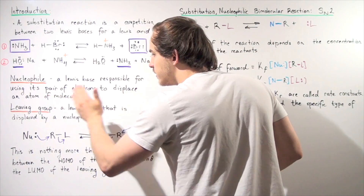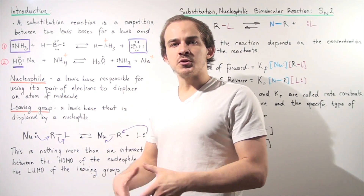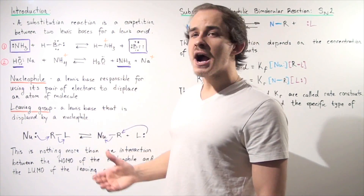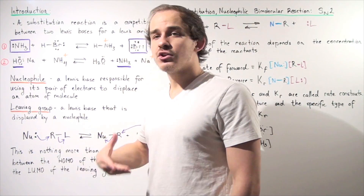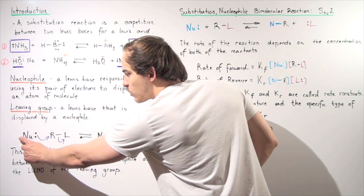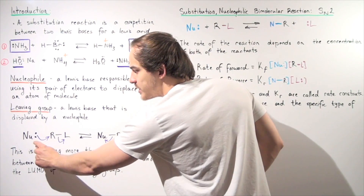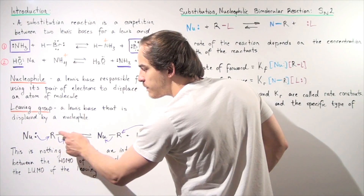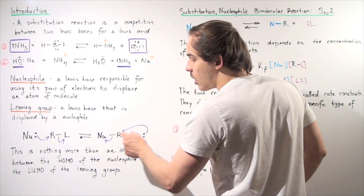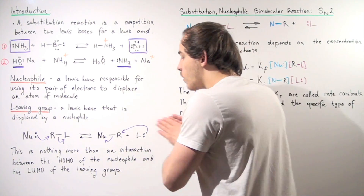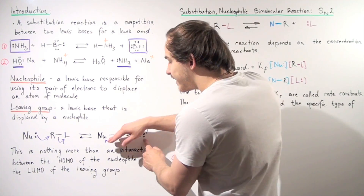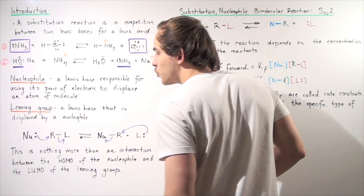So nucleophiles and leaving groups. There is a very general way in which we can represent a substitution reaction, given in terms of nucleophiles and leaving groups, where NU is our nucleophile that contains the lone pair of electrons and L is our leaving group. Our nucleophile uses its lone pair of electrons to attach itself to the R group, kicking off the leaving group. If we go backwards, this is our nucleophile and this must be our leaving group, so it does the attacking, takes this R group, and kicks off the nucleophile producing our reactants.